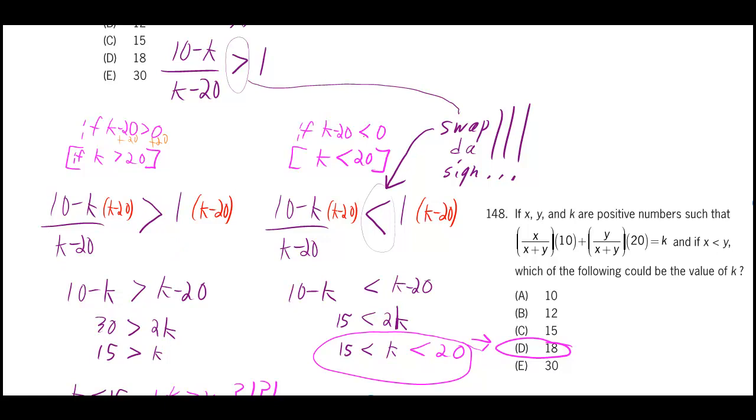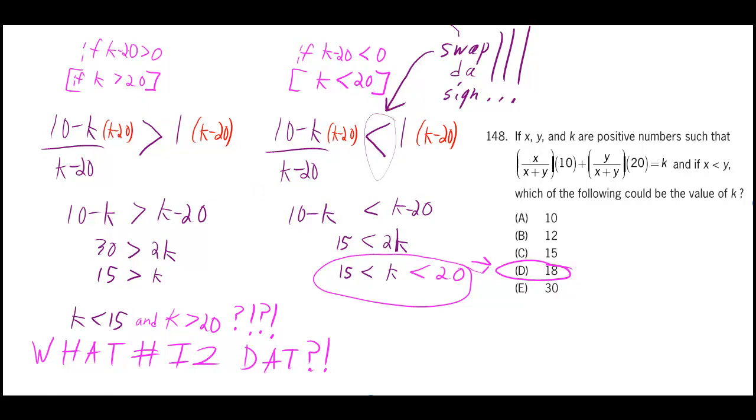Now, if you do it on the one where it's less than 0, you have to make sure that you take this sign and you have to swap it. So you've got to make sure that you turn it into a less than. So when you go through that, you get k is greater than 15. But hold on here. On the left side, we got k is greater than 20, and it's less than 15. What number is that? It's a contradiction. So that's out of the picture.